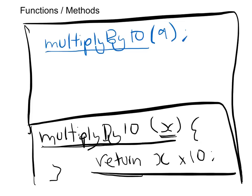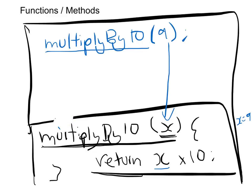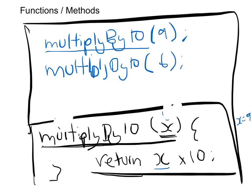The program — or compiler — will look and say: okay, I've got this name, I'll match it with the function. I've got this 9, I'll match it with x. So x equals 9, times 10, and we return that. I can also call it with 6 — it will make x equal to 6 in that instance. I can keep calling the same function again and again with different parameters.